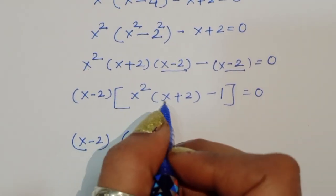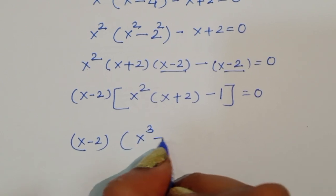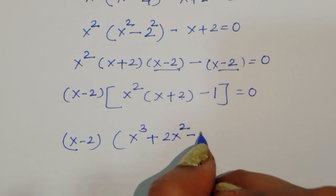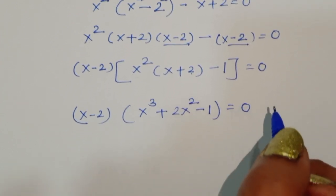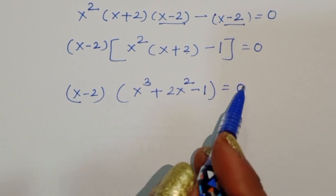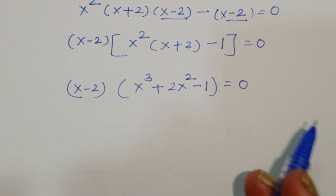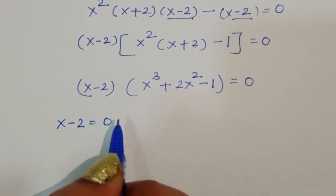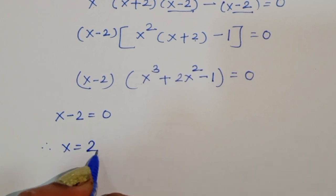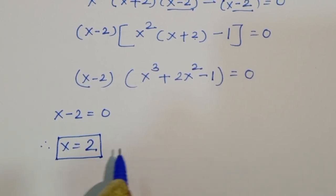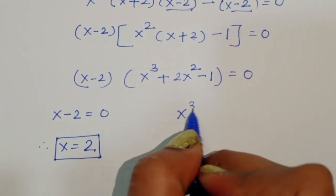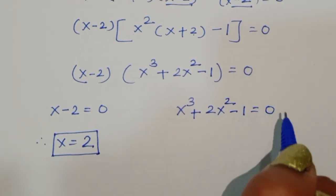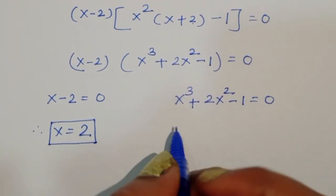Expanding x²(x + 2) gives x³ + 2x², so we have (x - 2)(x³ + 2x² - 1) = 0. This gives us two equations: x - 2 = 0 and x³ + 2x² - 1 = 0. From the first equation, x - 2 = 0, therefore x = 2. This is the first value of x.